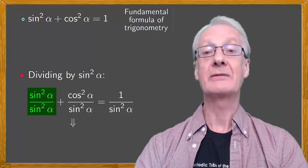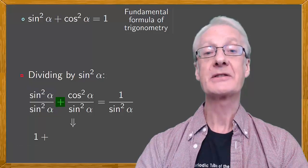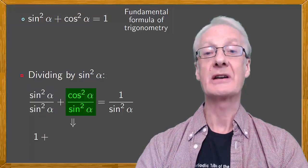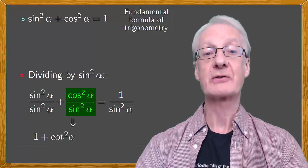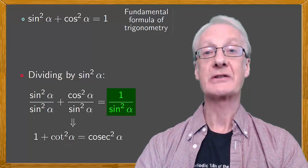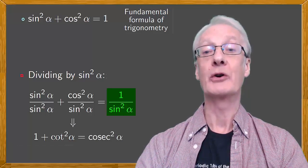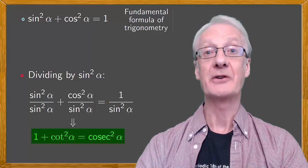So, we have sine squared alpha over sine squared alpha, which is 1, plus cos squared alpha over sine squared alpha, and cos over sine, remember, is cotangent. It's cot squared alpha is equal to cosec squared alpha, remembering that 1 over sine is cosecant. And there's our first derived formula.